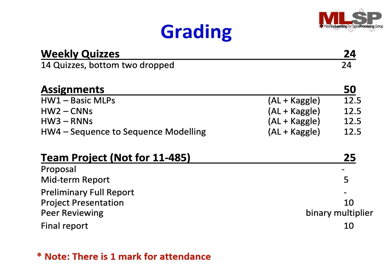When it comes to grading, weekly quizzes account for 24% of your total grade. We have 14 quizzes with the option to drop two, so each quiz is worth 2 marks. For the assignments, we'll cover a basic multi-layer perceptron, convolutional neural network, recurrent neural network, and sequence-to-sequence modeling, with each homework assigned 12.5 marks. For the team project — which is not for undergraduates — you'll be submitting a proposal, a midterm report, a preliminary full report, a project presentation, and peer reviewing and the final report. The peer reviewing is where you review the members of your team, and we highly recommend you participate within your team as it may affect your grade. Finally, there is 1 mark for attendance.